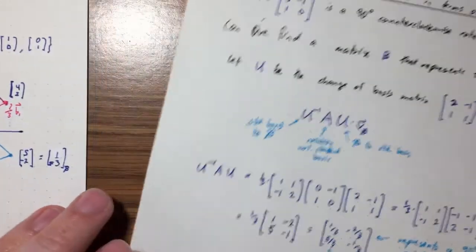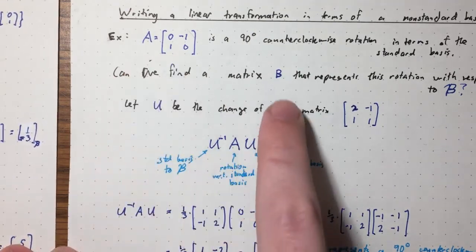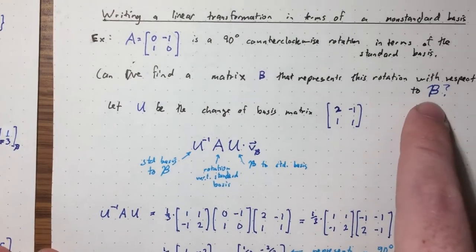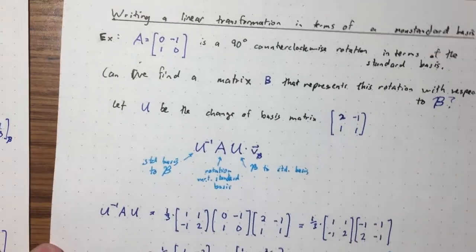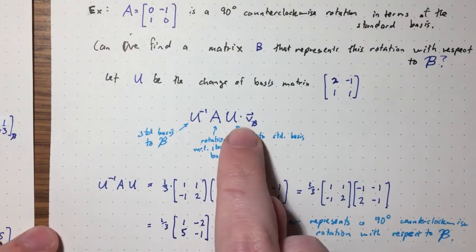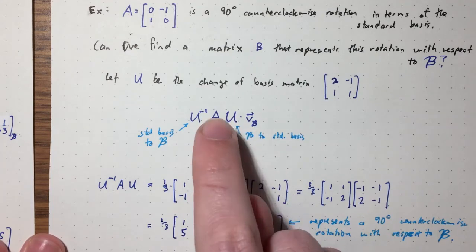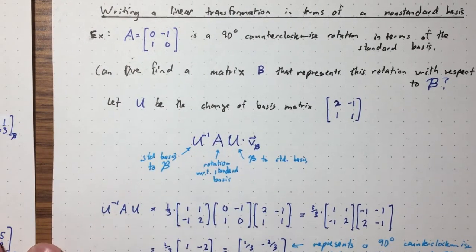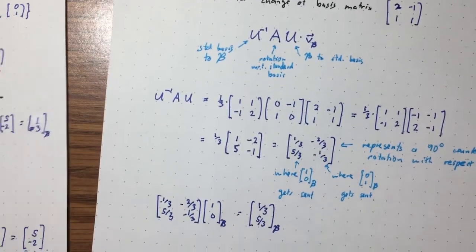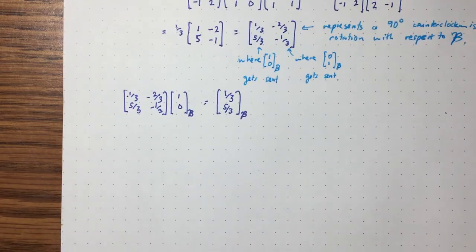To summarize: if A is a matrix with respect to the standard basis and we want to convert it to a matrix with respect to the non-standard basis that does the same geometric transformation, we do it in three steps. Take our non-standard basis vector, convert to the standard basis, apply the transformation, then convert back to B. The result is U^{-1} · A · U.